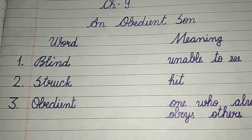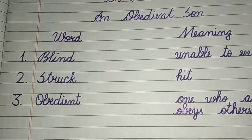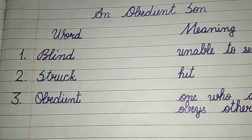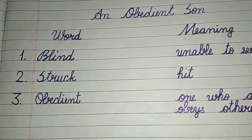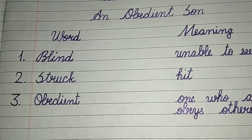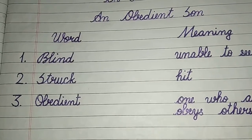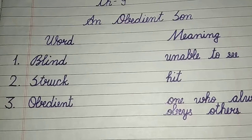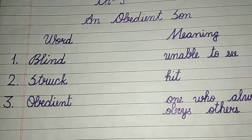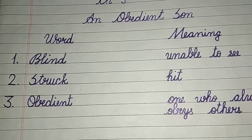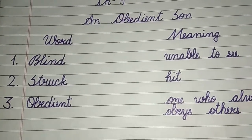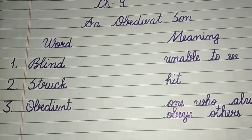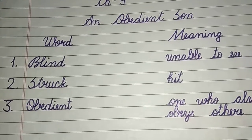So let's begin. First, word meaning. The first word is 'Blind'. Meaning is: unable to see. Blind means Andha — jo dekh nahi sakta.